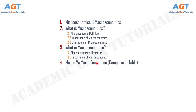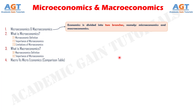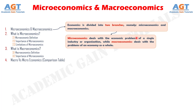Make sure to watch the full lecture to generate a more clear concept on these topics. Economics is divided into two branches, namely microeconomics and macroeconomics. Microeconomics deals with the economic problems of a single industry or organization, while macroeconomics deals with the problems of an economy as a whole. Both of these branches contribute a major part in business analysis and decision making directly or indirectly.